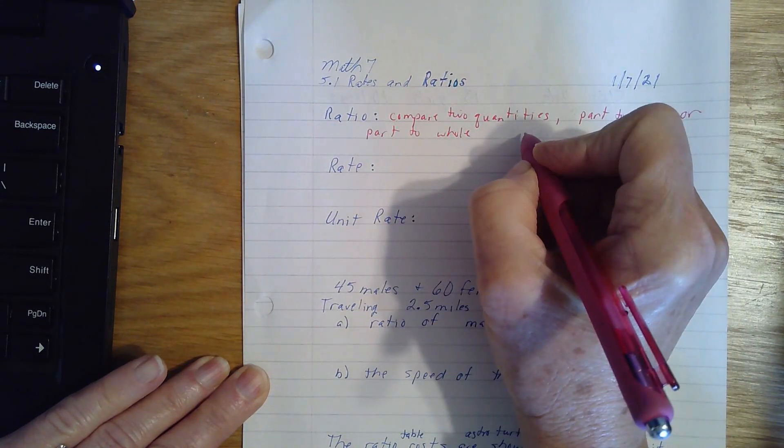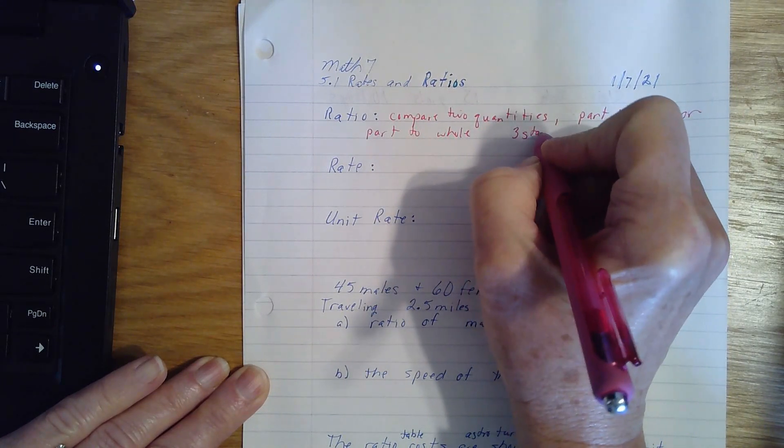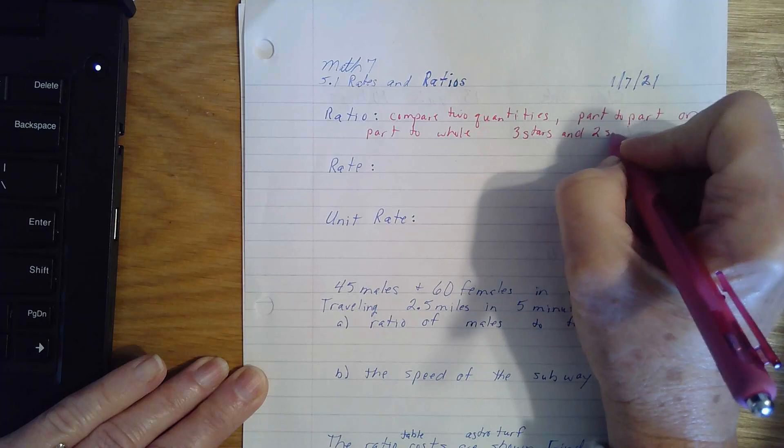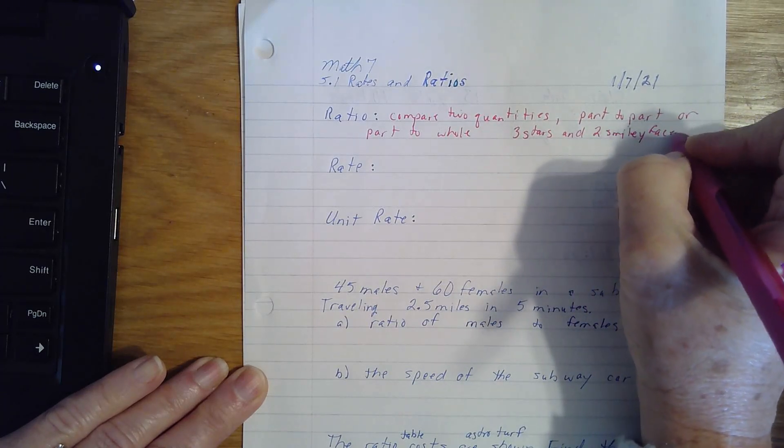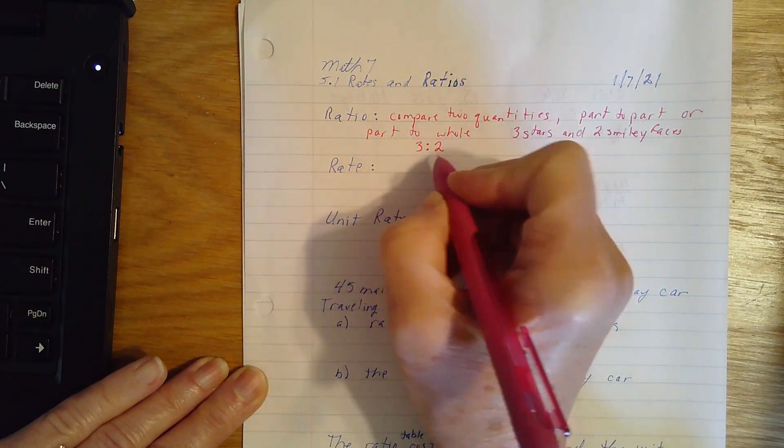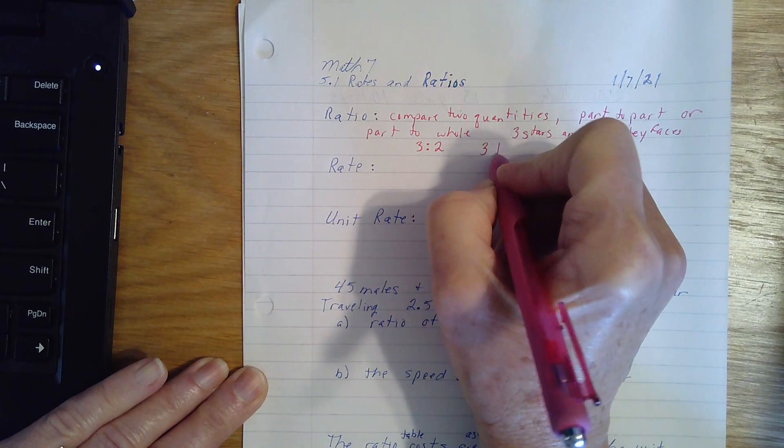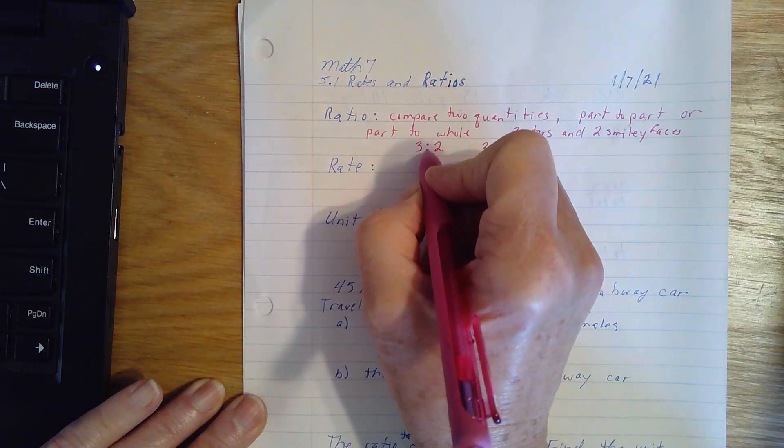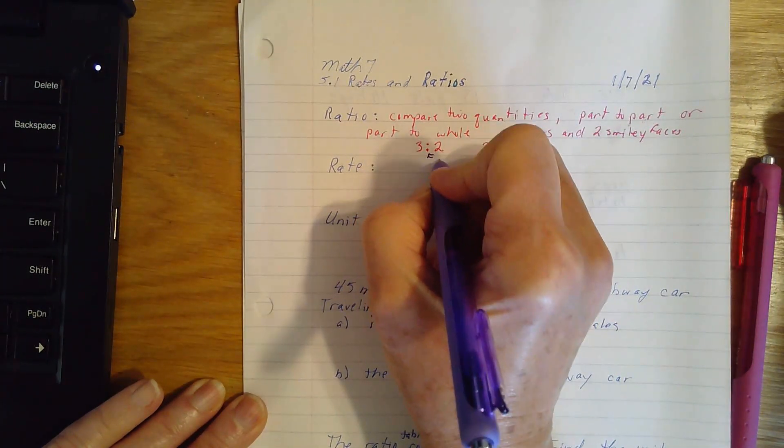It can be written three different ways. So if I'm comparing three stars and two smiley faces, that could be a 3 to 2 comparison with a colon. When you see the colon, you say the word 'to'. So I'm just going to make a little note here that that means to.